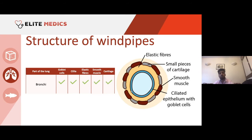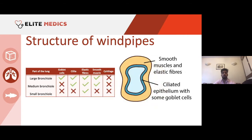It's basically the same structural components, but you need to learn the arrangement so you can recognise it. If an exam diagram isn't labelled, just by looking at it you should be able to tell it's the bronchus. In the bronchioles, there are differences: in large bronchioles you have everything apart from cartilage; in medium bronchioles you have everything except goblet cells and cartilage; and in small bronchioles you have nothing apart from elastic fibres.